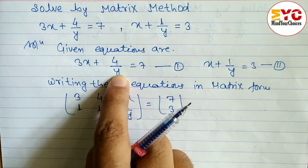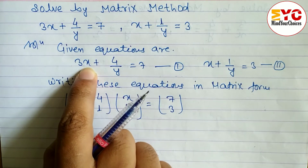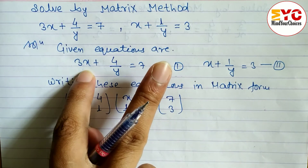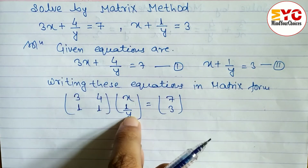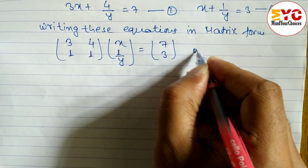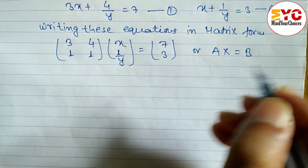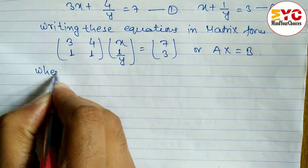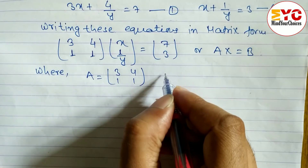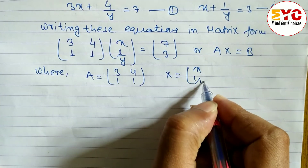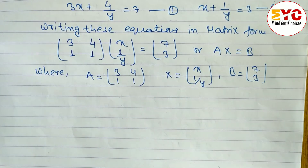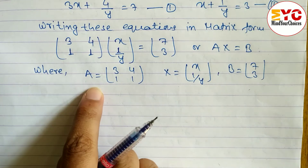If y is in the denominator we write 1 by y; if x is also in the denominator we write 1 by x; if both are in the denominator we write 1 by x and 1 by y. This system is now in the form AX = B, where A equals the matrix [3, 4; 1, 1], X equals the column matrix [x; 1/y], and B equals the column matrix [7; 3].